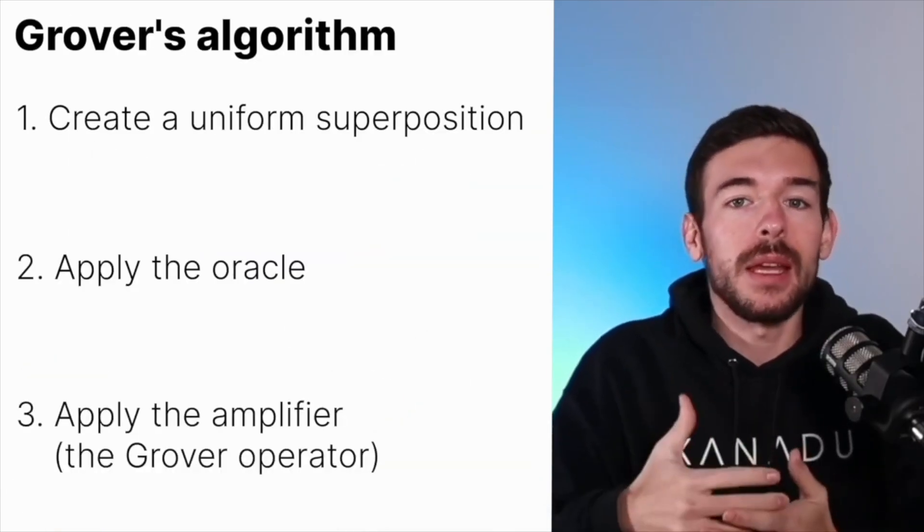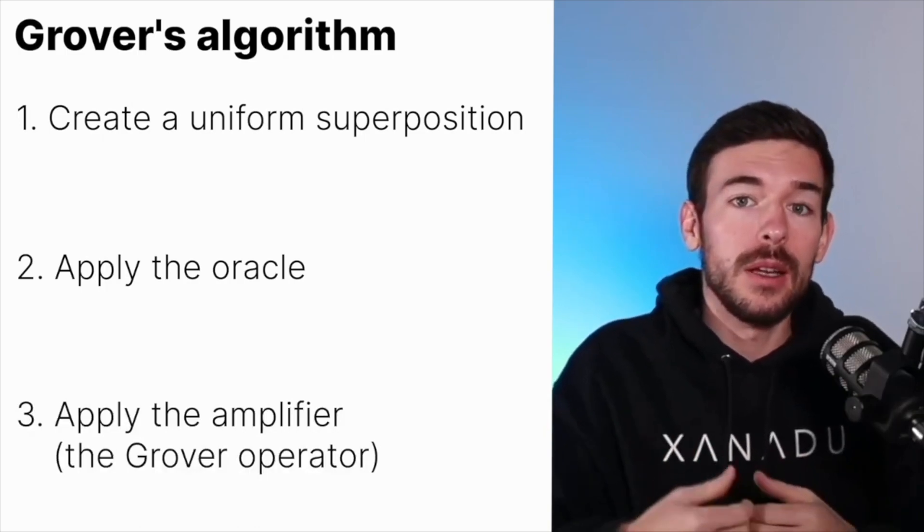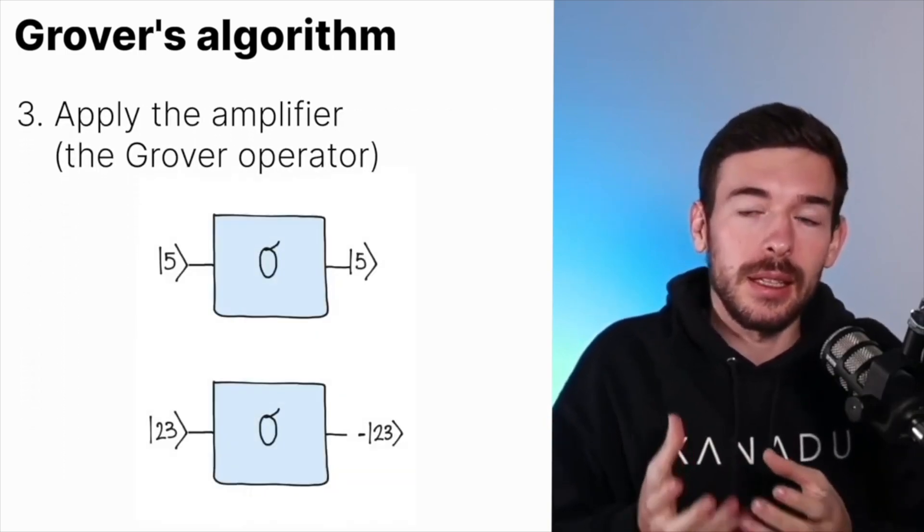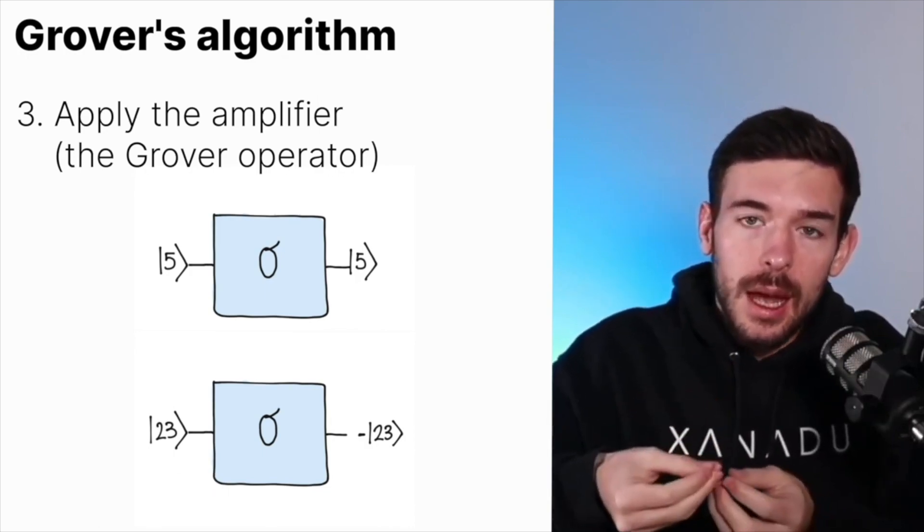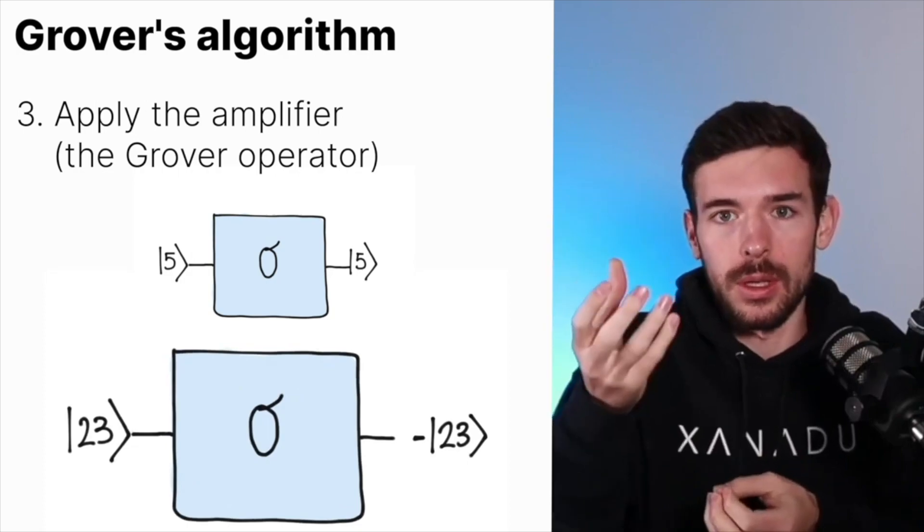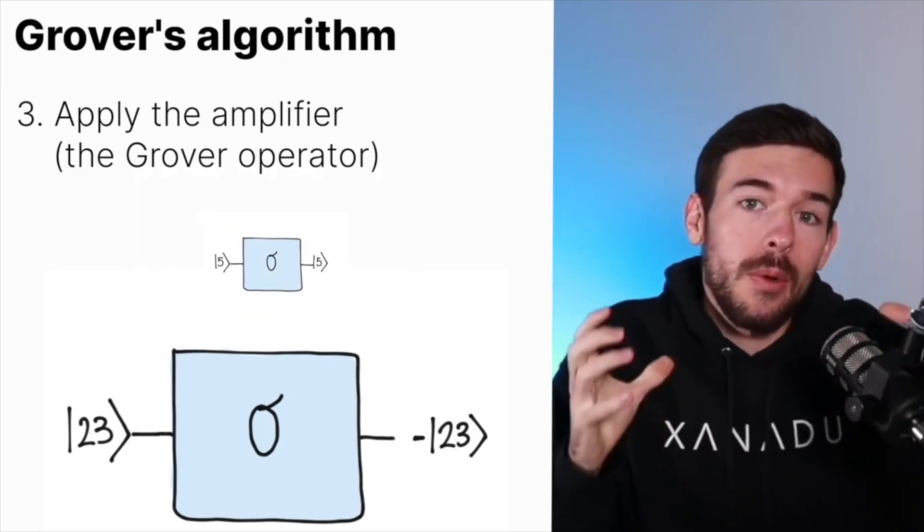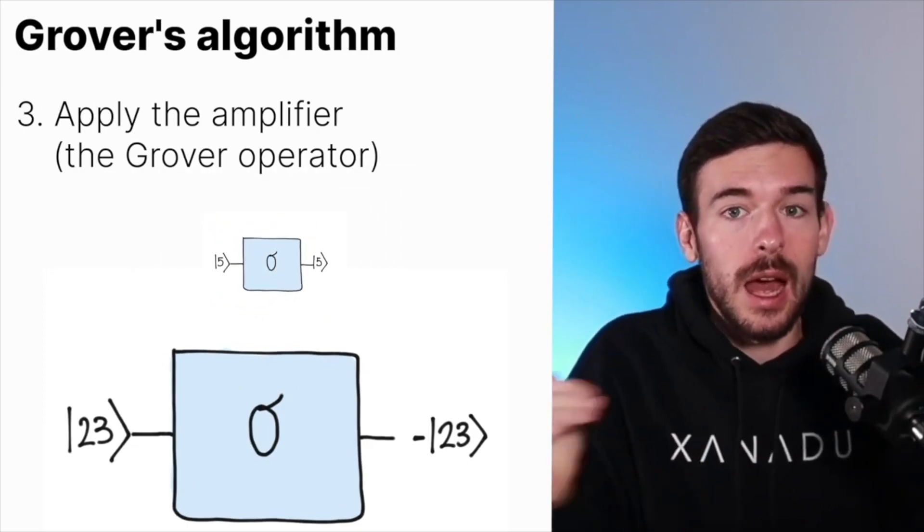And the third step is apply the amplifier or the Grover operator that is built in such a way that is able to take the negative elements and amplify the probability to watch them and reduce the probability of the elements that have a positive value.